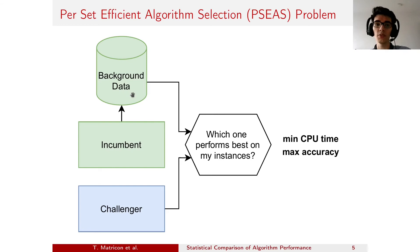The incumbent data is added to the background data that we have about the instances and the runtimes of other algorithms on our instances. We plug the background data and the challenger into our algorithm to answer the question of which one performs best.